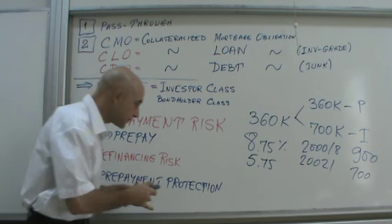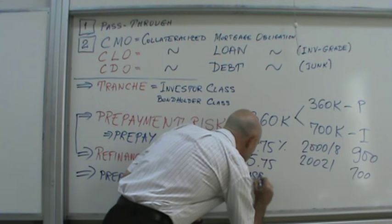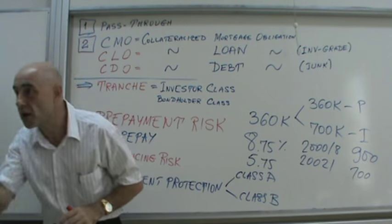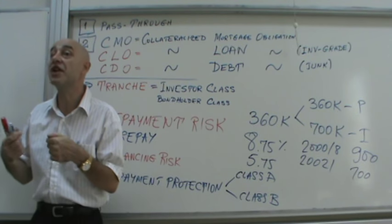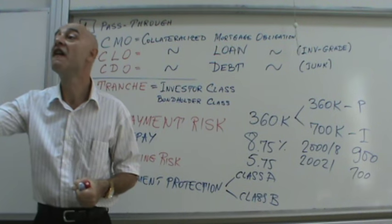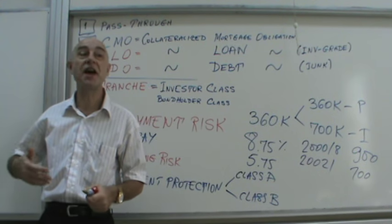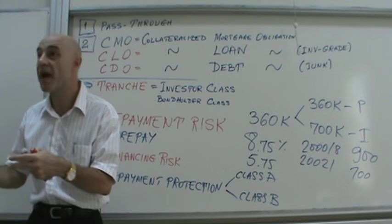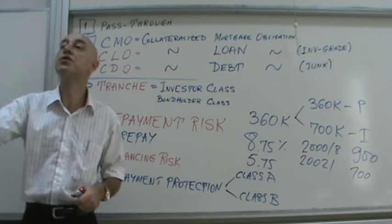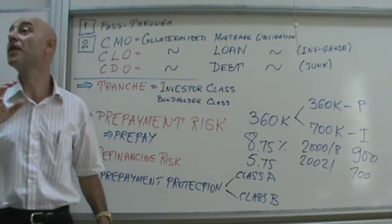Prepayment protection works as follows with investor classes. Class A: whenever there is a prepayment, they always get the prepayment first, along with their 6% interest rate. Class B does not get the prepayment — they have prepayment protection, while Class A does not.